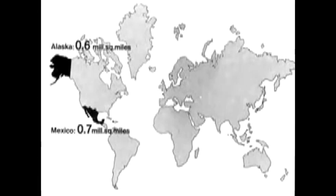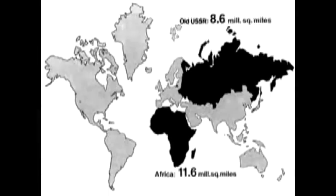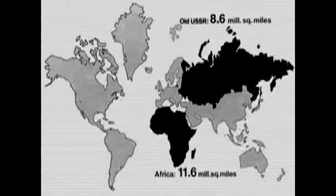Alaska's 3.9 million square miles are drawn much larger than Mexico's 0.7 million square miles. Perhaps the most egregious distortion is found when comparing the inflated 8.6 million square miles of the old Soviet Union to the greatly diminished 11.6 million square miles of Africa.